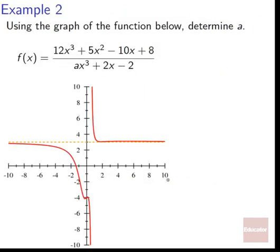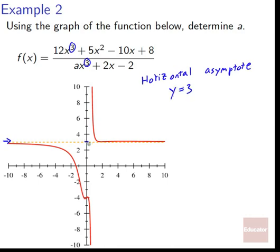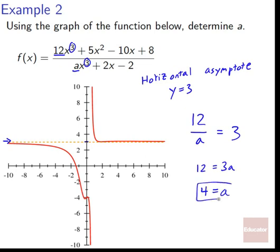Example 2: using the graph of 12x cubed plus 5x squared minus 10x plus 8 over ax cubed plus 2x minus 2, determine a. Both numerator and denominator have degree 3, so there's a horizontal asymptote — confirmed by the graph, which shows a horizontal asymptote at y equals 3 (cutting evenly between 2 and 4). The ratio of leading coefficients 12 over a must equal 3, so 12 equals 3a, giving a equals 4.